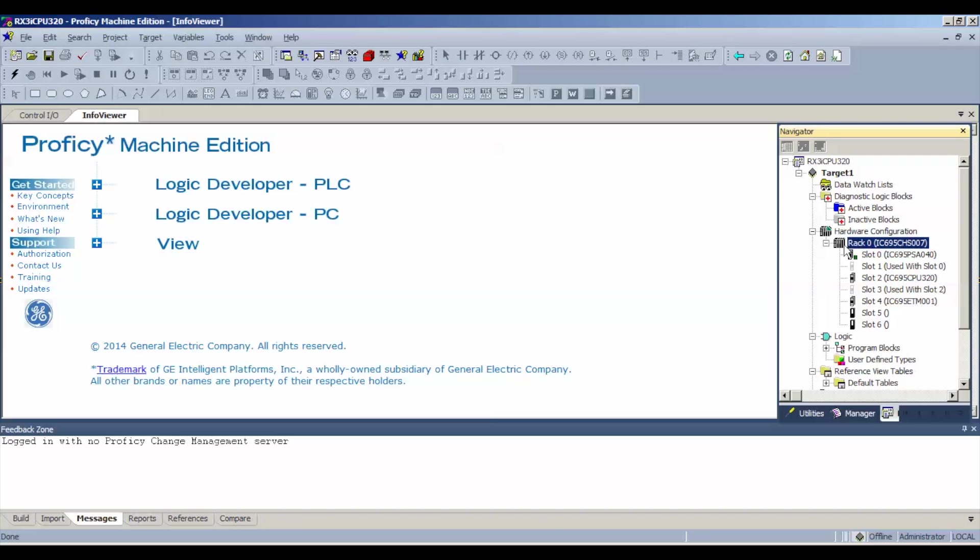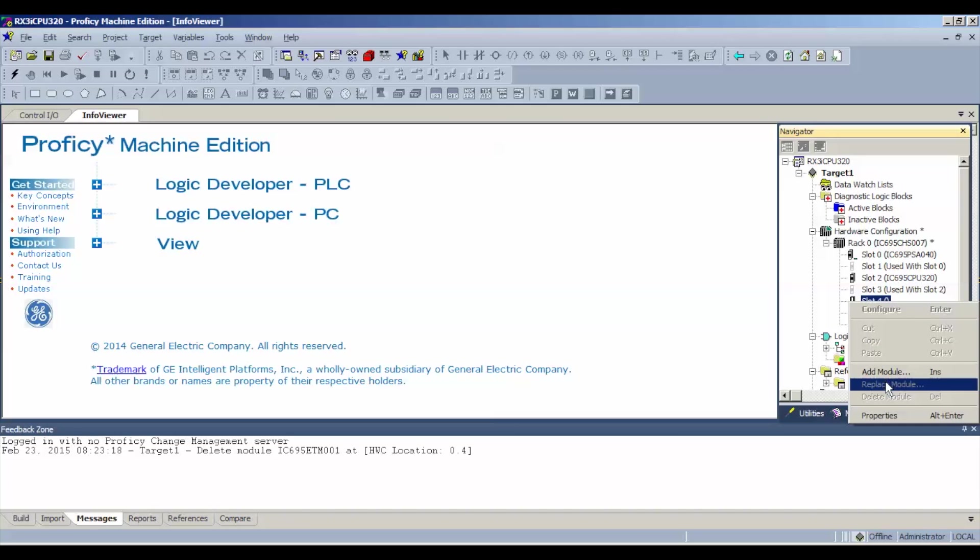If you guys follow my arrow here, I'm going to open up my rack zero. As you can see, I have the IC695CHS007 rack, IC695PSA040 using slots 0 and 1, so it uses two slots, and the CPU320 which is using slots 2 and 3. That leaves me with the next available slot, which I have this module in slot 4.